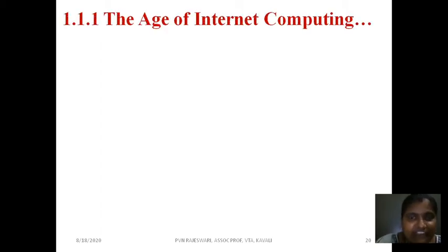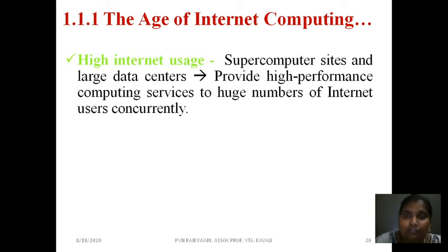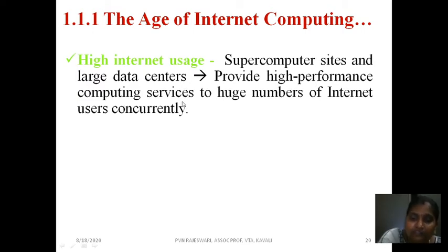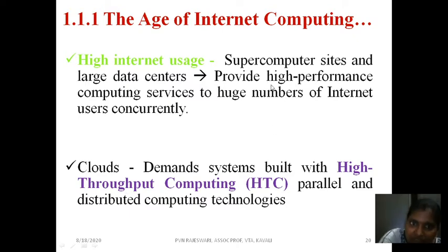Next, the age of internet computing. Because of this evolution of the internet, a lot of changes occurred by which mainframe computers and supercomputers can do a lot of processing because of this connectivity. This computing can be called high throughput computing. With high internet usage, large data centers can provide high performance computing services. These are called high throughput computing, made possible with the help of parallel and distributed computing technologies.